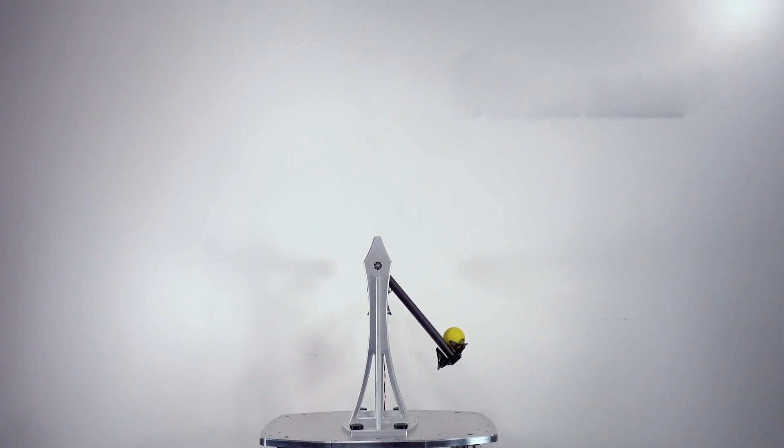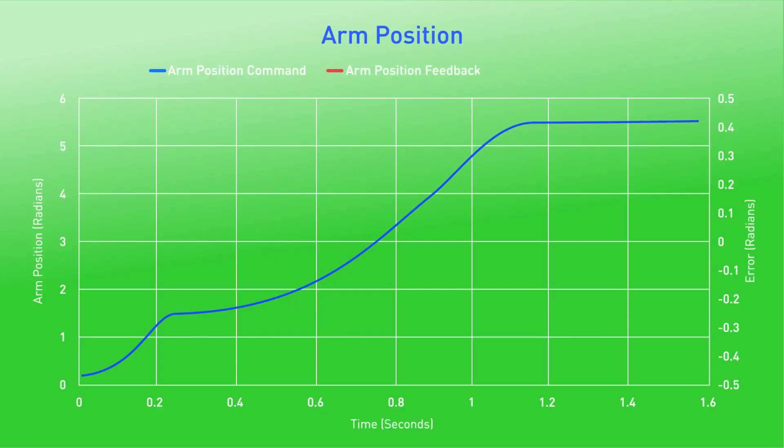Positional accuracy and repeatability are incredibly important with this system, especially since there are no optical tracking features to follow the trajectory of the ball. As you can see, when we overlay the commanded arm position with the measured arm position feedback, the resulting error is very small.